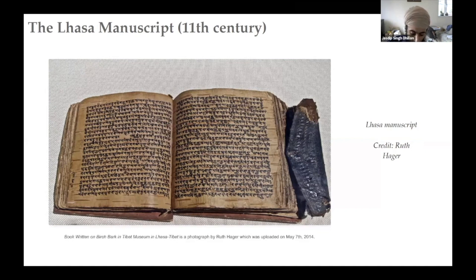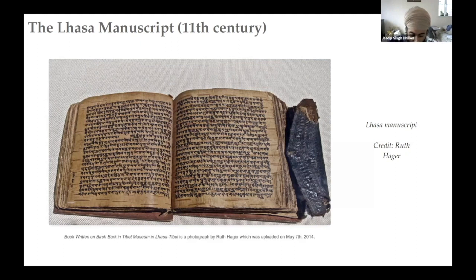All the Kashmiri birch bark codices I have seen physically or digitally have been sewn using the same unsupported loop linking method with a thick thread on two sewing stations. This is not specifically visible on the Lhasa Codex, but it is likely sewn in this way because all the other codices studied have been sewn in the same manner. Birch bark codices consistently also have a textile spine lining, which is sometimes used to line the entire inside of the covers. The textiles observed for this component are consistently plain and used for a structural purpose only. The most visible feature of the Kashmiri birch bark codex is possibly the unique end band structure.